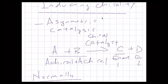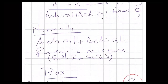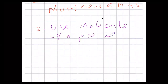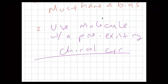Using a chiral catalyst is one way — that's asymmetric catalysis. The other way to induce chirality is to have a pre-existing stereo center, so you use a molecule with a pre-existing stereo center. That's the second way. There's another way too but I'm not going to talk about it.